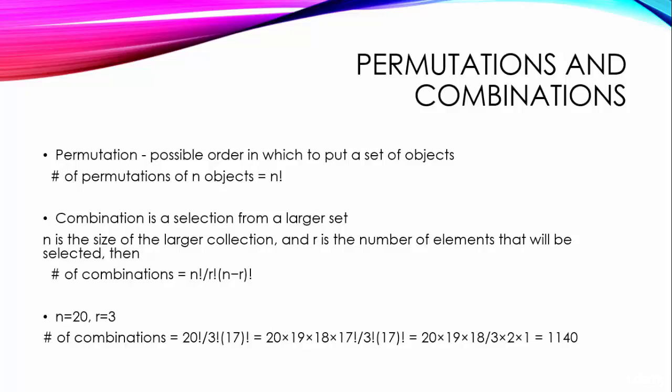It's written as an exclamation sign. And it means the product of that number and all the positive integers below it down to one. For example, 4 factorial is 4 into 3 into 2 into 1 is equal to 24. So number of permutations of n objects will be n factorial.